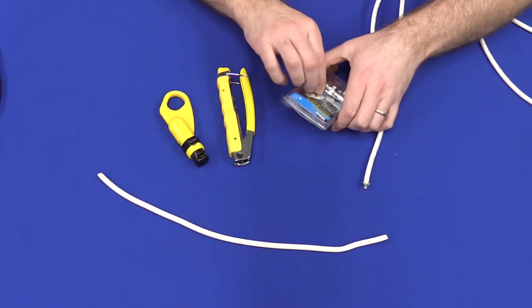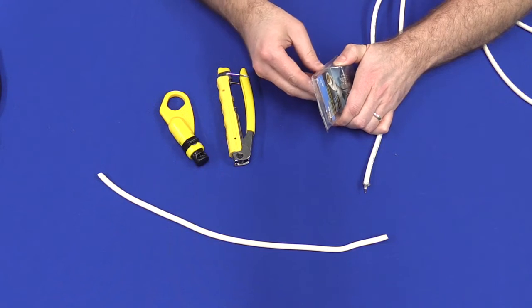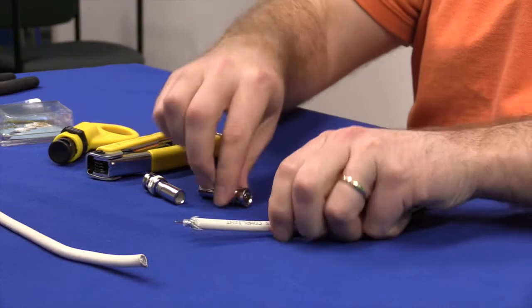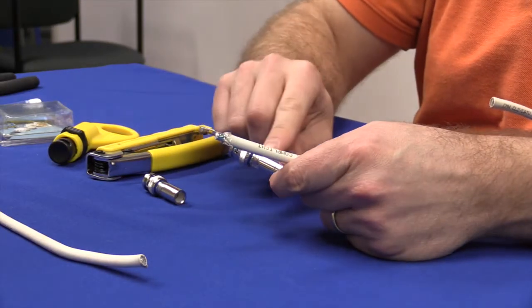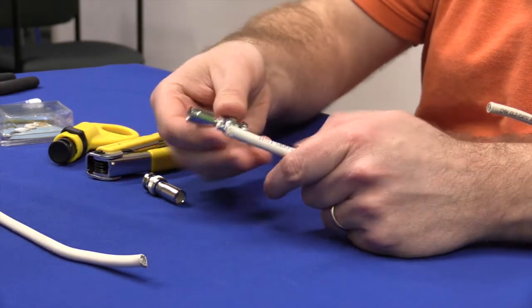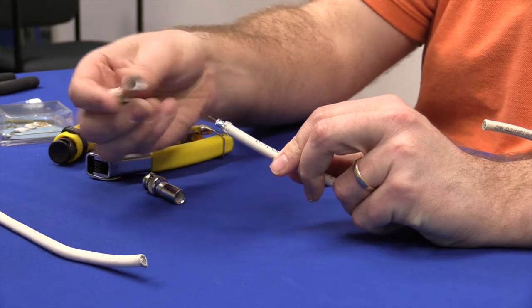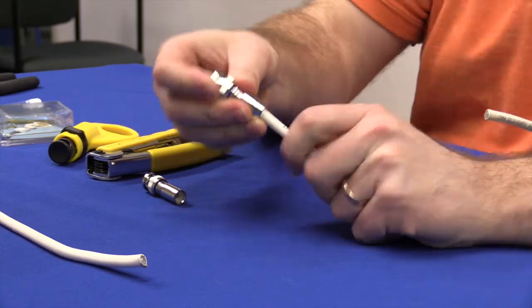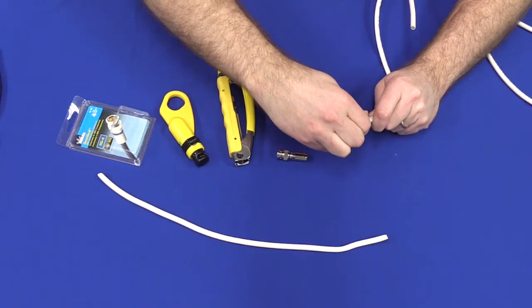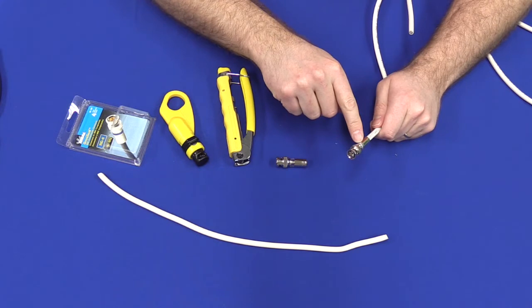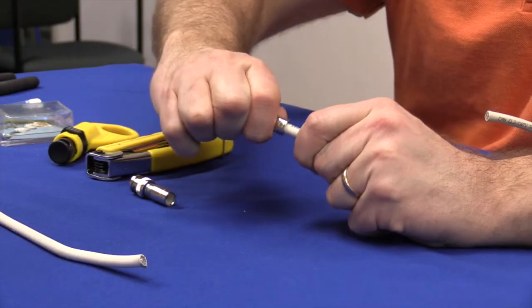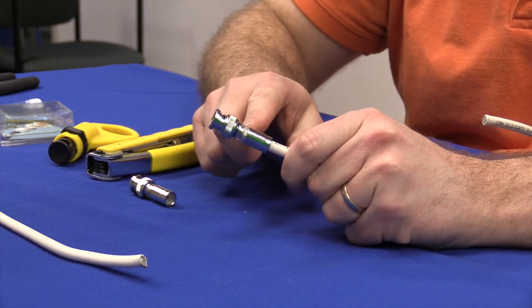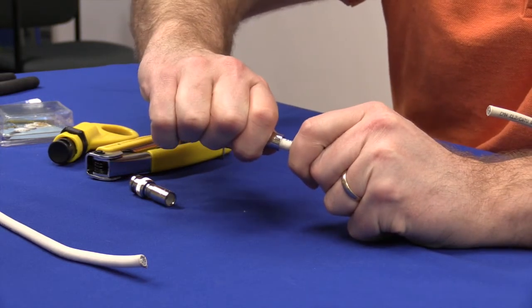You're going to take one of your connectors. Now these connectors have a clear window, so you can see when they are pushed on. I'm going to push this connector on as far as I can. It takes a little bit of force, but you can see when the cable goes in, there's a clear indicator. You want to make sure that the cable goes as far up on the connector as it can.